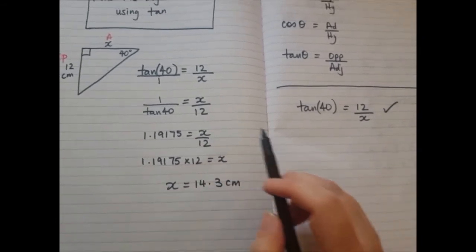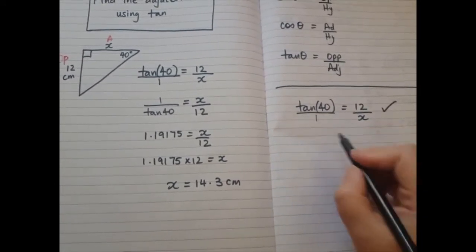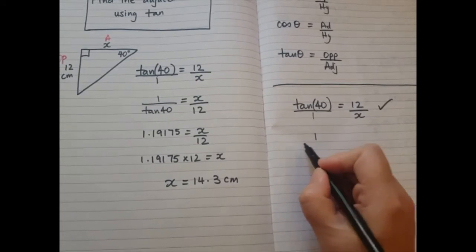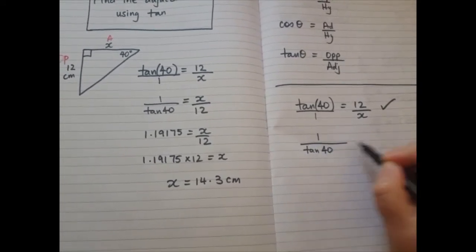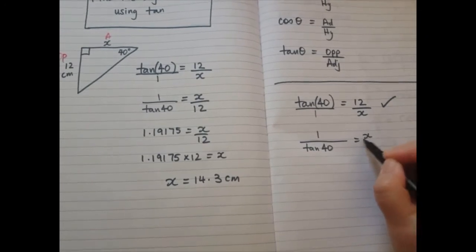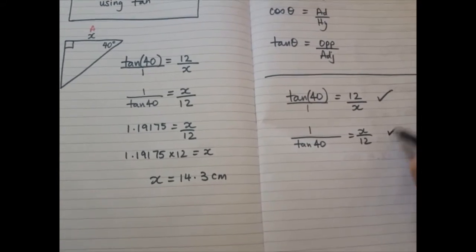Next I strongly recommend that you write 1 over 1 and that you write down this line. Change this fraction to be upside down and then change this fraction upside down as well. Invert both the fractions. You really should write this, so I'm going to give a tick there.